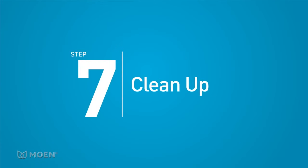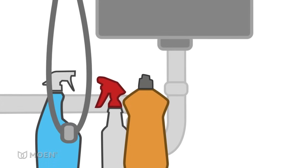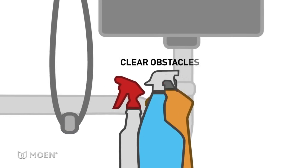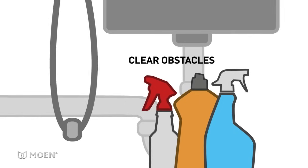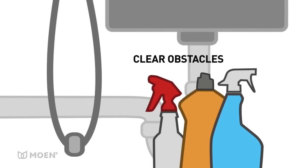The last step is cleaning up. In order for the spray wand to function properly, the area around the hose should be clear of any cleaning supplies or other obstacles that might inhibit hose movement.